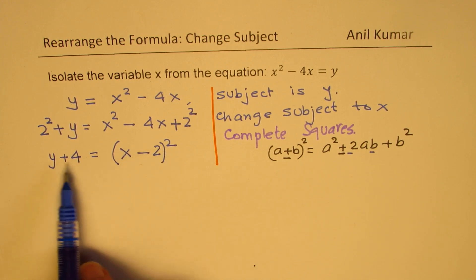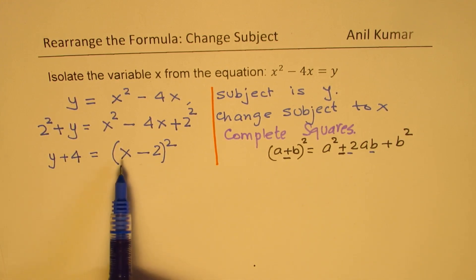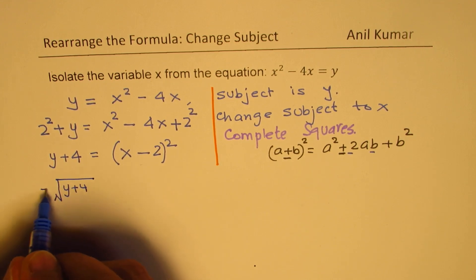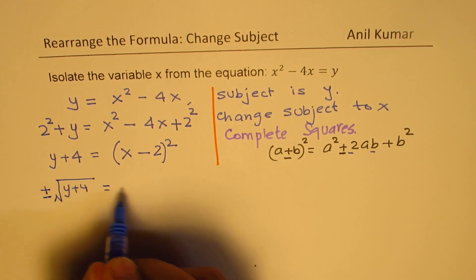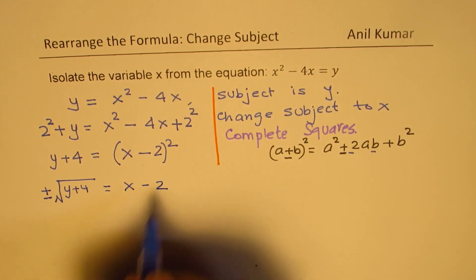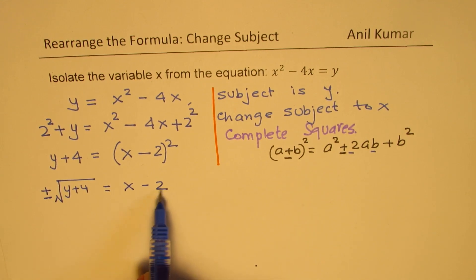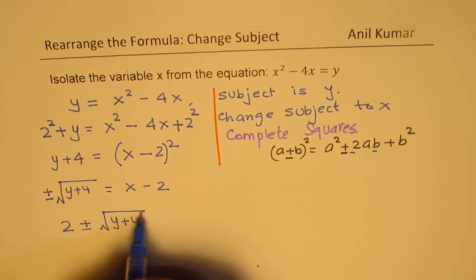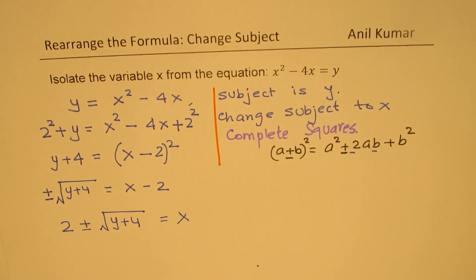Now, we can square root. Once we get a perfect square, we can easily isolate x. Once you square root, you have to write plus and minus. That should be equal to x minus 2. Now you can take 2 on this side, so you get 2 plus minus square root of y plus 4, which is equal to x.